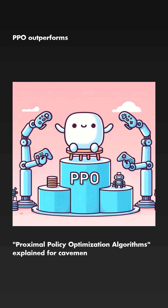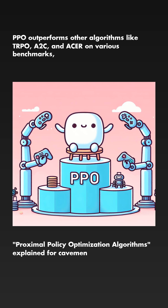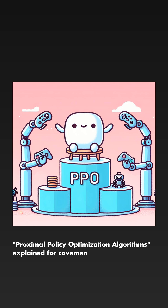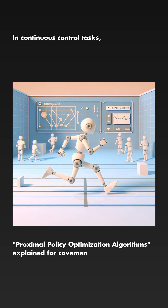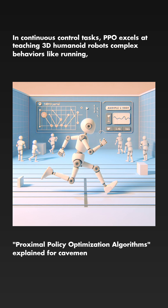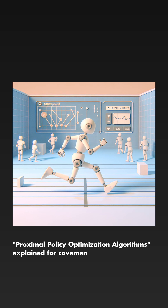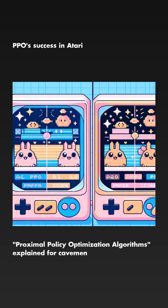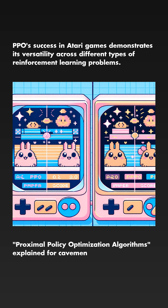PPO outperforms other algorithms like TRPO, A2C, and ACER on various benchmarks, including continuous control tasks and Atari games. In continuous control tasks, PPO excels at teaching three humanoid robots complex behaviors like running, steering, and getting up after falls. PPO's success in Atari games demonstrates its versatility across different types of reinforcement learning problems.